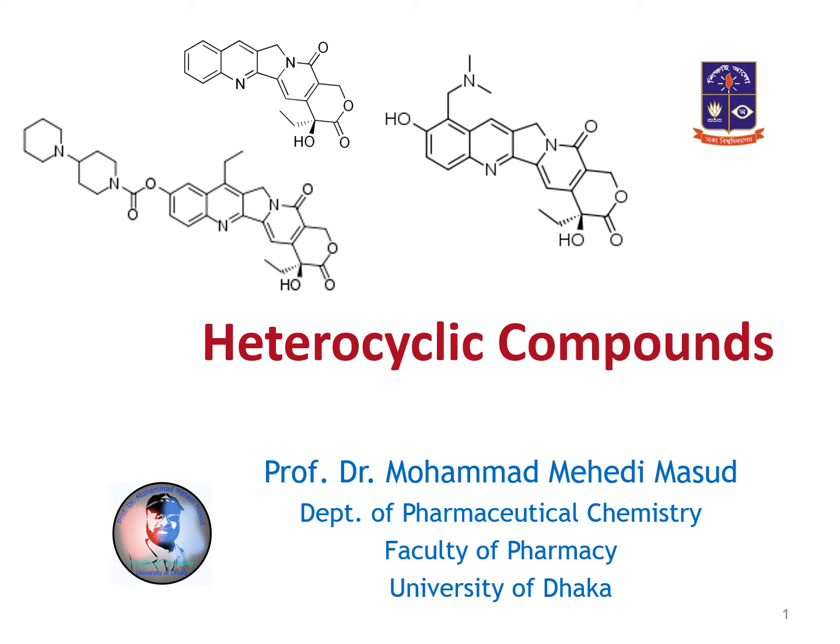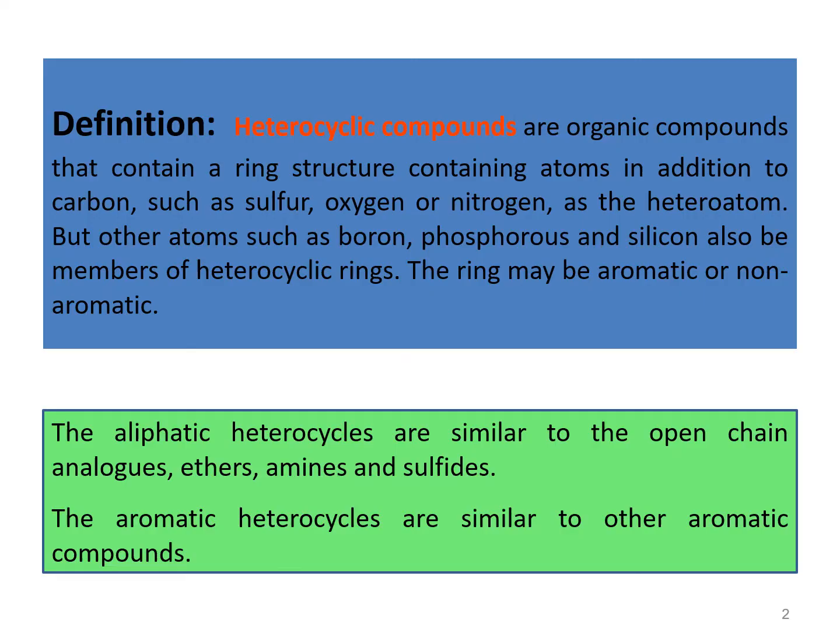All of you know that in chemistry there are two types of cyclic compounds. One is homocyclic compounds and another is heterocyclic compounds. Homocyclic compounds are those compounds in which the ring-forming atoms are all the same, that is carbon. For example, benzene, where every ring-forming atom is carbon.